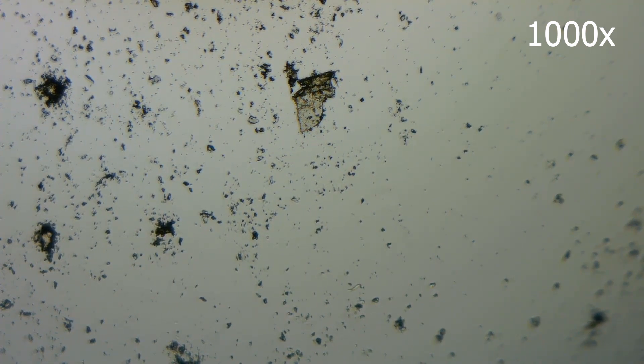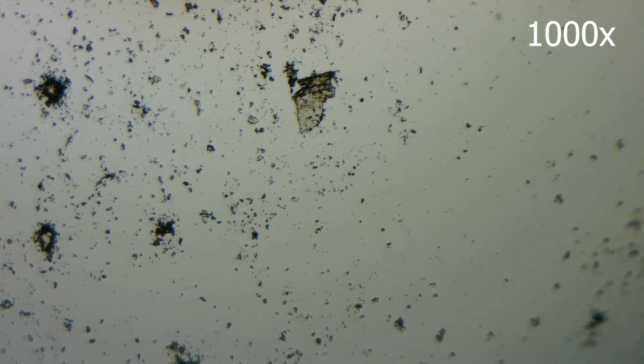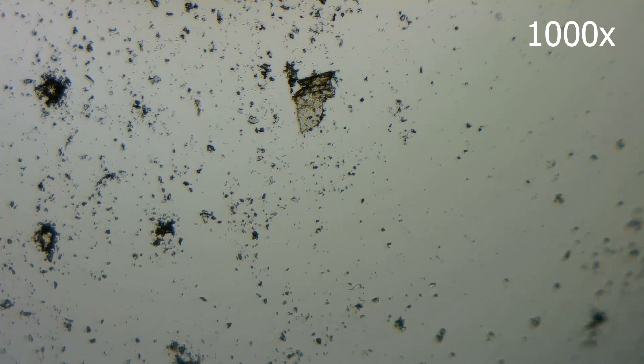Aspergilloma, also known as a fungal ball, occurs when Aspergillus colonizes pre-existing lung cavities or damaged lung tissue. This can lead to symptoms such as coughing, chest pain, and blood-streaked sputum.